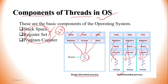That means for one processor, threads are created. Each thread has a stack and register. We can see the shared code, data, and files across the processor.